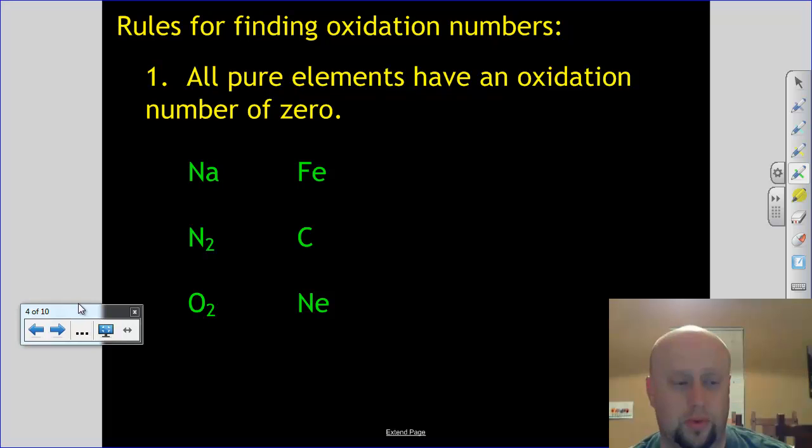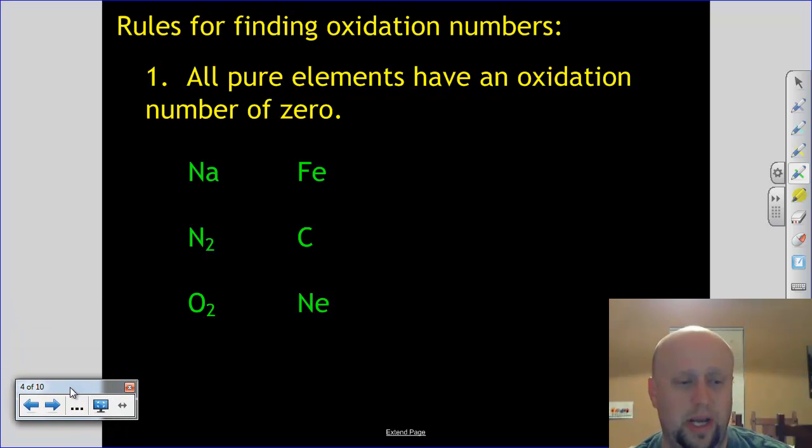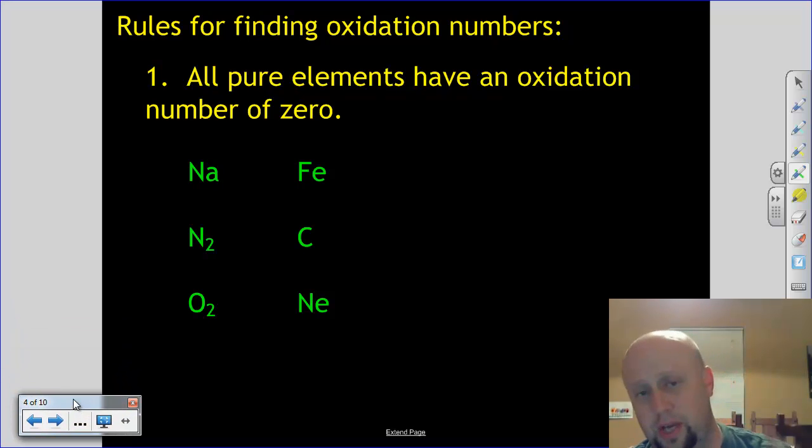So there are rules for finding oxidation numbers. There's no way to get around it other than to know the rules. So you should hit pause, copy down the rules, and I'm going to explain each rule as we go through. So do that for each slide as we go through. So rule number one, all pure elements have an oxidation number of zero.